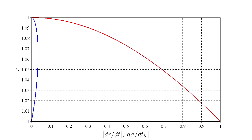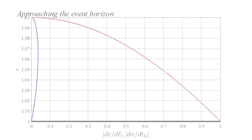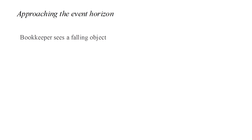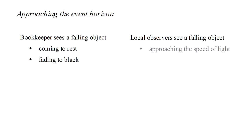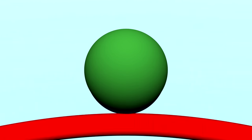For the fall from r equals 1.1, locally measured velocity once again starts at zero and then approaches the speed of light at the horizon. So, approaching the event horizon, the bookkeeper sees a falling object coming to rest and fading to black, while local observers see a falling object approaching the speed of light. The same object is seen by different observers to both approach the smallest possible speed — rest — and the largest possible speed — that of light. This is the scenario that we, somewhat crudely, tried to visualize using the embedding diagram. Viewed from above the surface, corresponding to the bookkeeper's view, an object does indeed appear to slow down in its motion toward the black hole. But the same motion viewed by local observers displays no slowing at all.